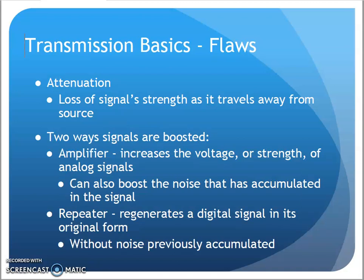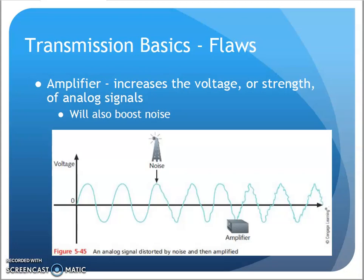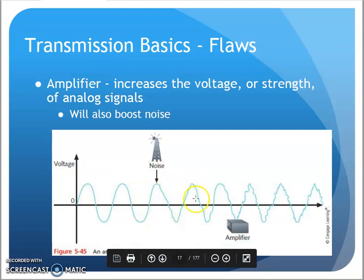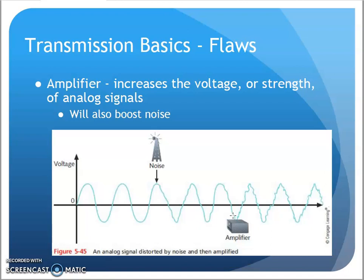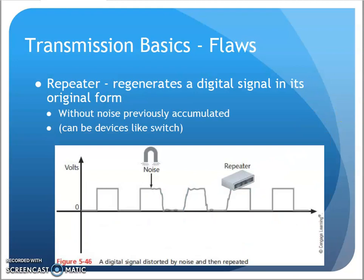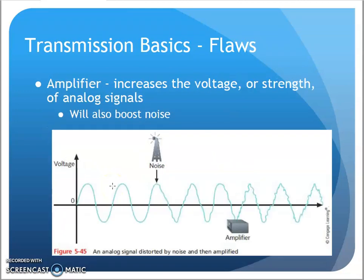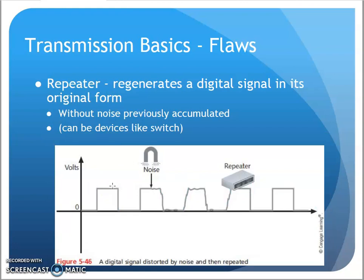We can actually boost a signal using an amplifier or repeater. An amplifier is typically an analog type thing — it takes whatever signal it gets and tries to boost it. So if I have a signal and it picks up noise along the way, the amplifier boosts anything it gets, including the noise. We don't see that too much in data. We typically see things in the repeater realm, dealing with digital signals — literally sending ones and zeros, 1, 0, 1, 0.